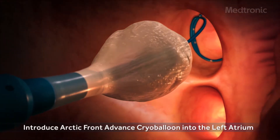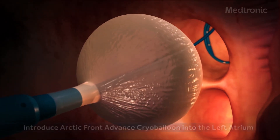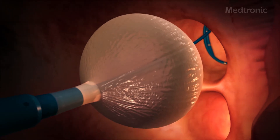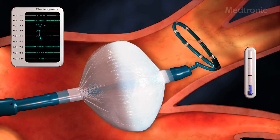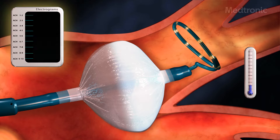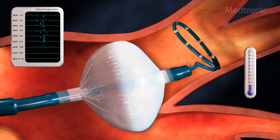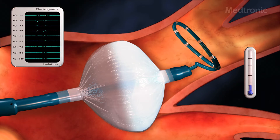Cryoablation is the primary modality we use to do this procedure. We deliver the cryo energy with a balloon that's blown up in the top left chamber, and we basically place that balloon against the tissue that we're trying to ablate and start the freezing process. That essentially causes a scar to form, and that is what doesn't allow the electrical signals to conduct from those trigger areas into the heart.